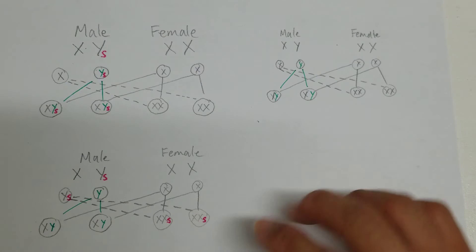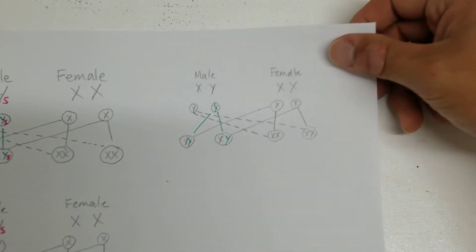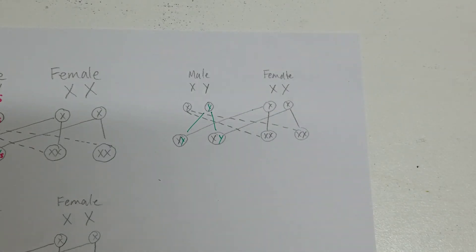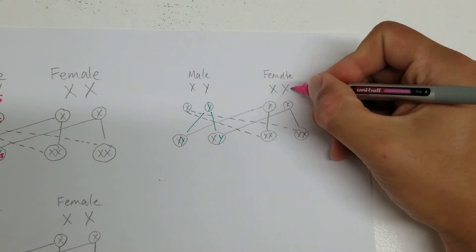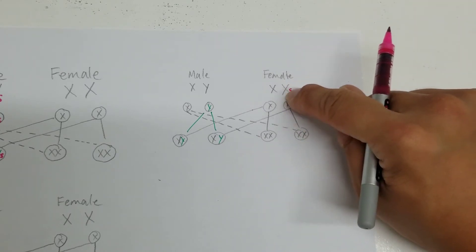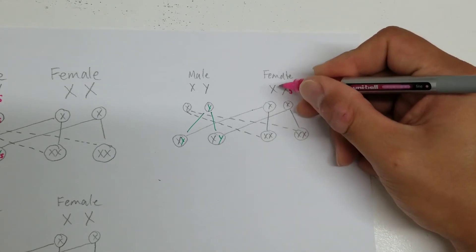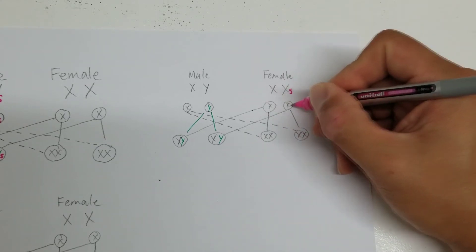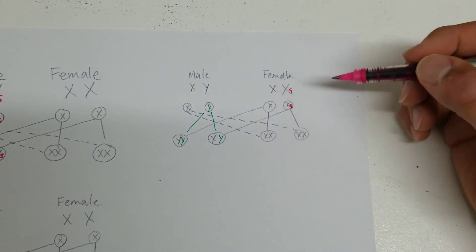So now let's take this a step further. So that female is now here with that sex link gene attached to this X chromosome. So what that means is now when its cells divide, one of those eggs will have the sex link gene.